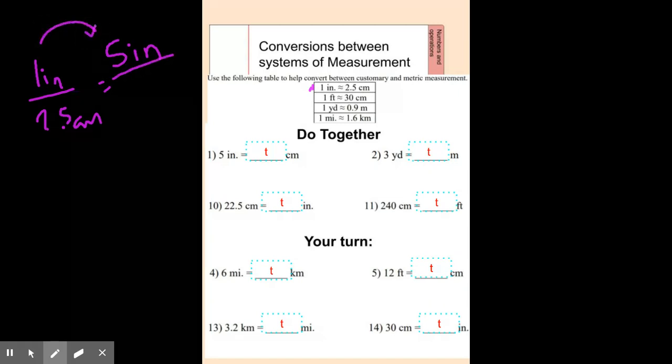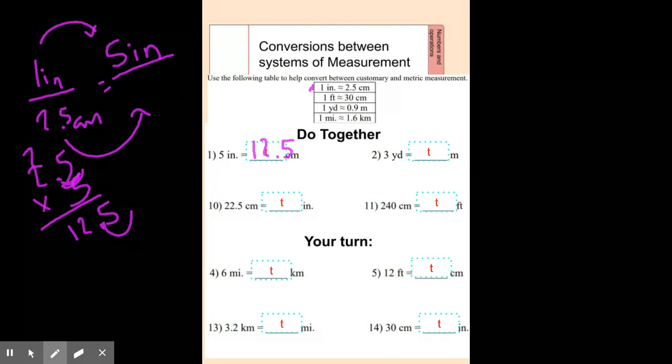So one times five is five. So I'm going to do 2.5 times five. Five times five is 25. Five times two is 10 plus two is 12. And we have to move it over one decimal place. So it should be 12.5 centimeters. So you can go ahead and type that in there.